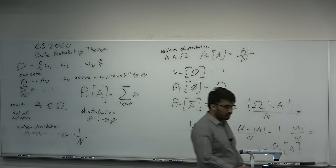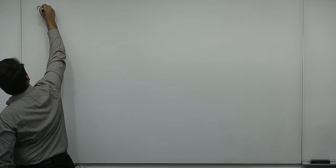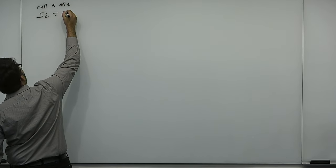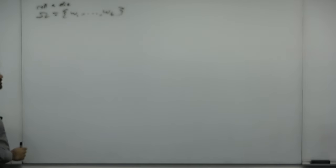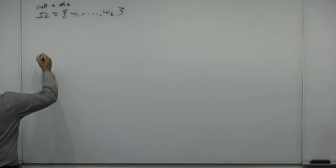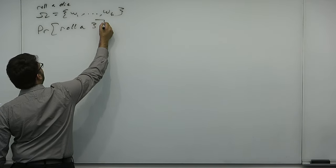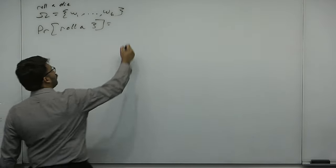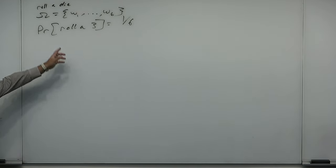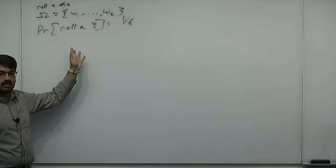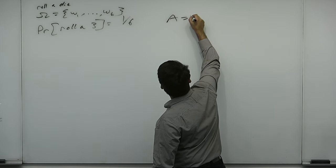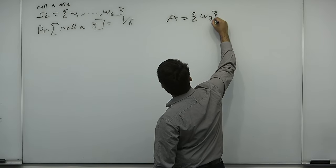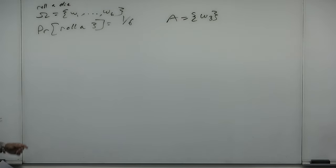Let's do some examples. Suppose you roll a die. We formalize this: our set of possible outcomes is omega 1 to omega 6 — six possible outcomes. We say the die is uniform, so each outcome is equally likely. What is the probability that you roll a 3? One sixth. Formally, rolling a 3 is an event, and the event is a set of outcomes — this set has size 1. Using the probability formula you get 1 over 6.